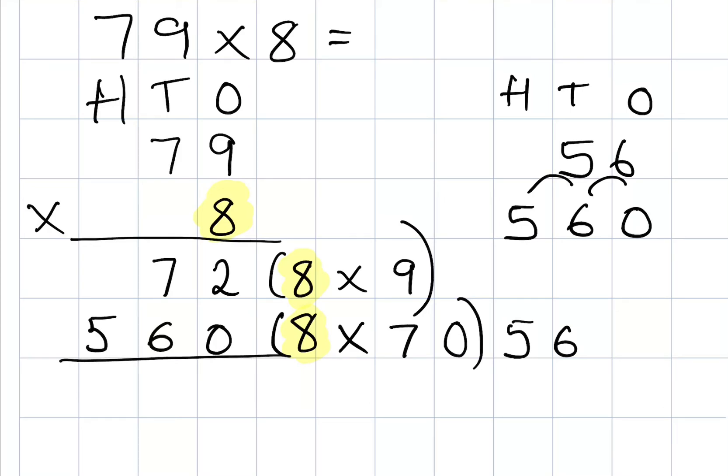Now this leaves me with the final job of adding up my columns. 2 add 0 is 2. 7 add 6, 70 add 60 is 130. I can't have 100 in the tens column, so I need to carry that 100 across down to the bottom here into the hundreds column. So it was 130, the 30 is in my tens column, so I need to put my 3 in my tens column.